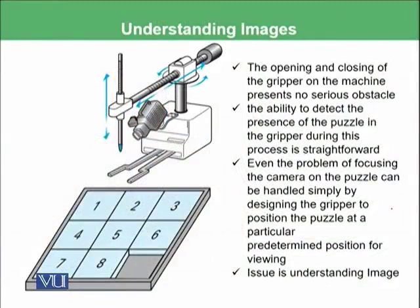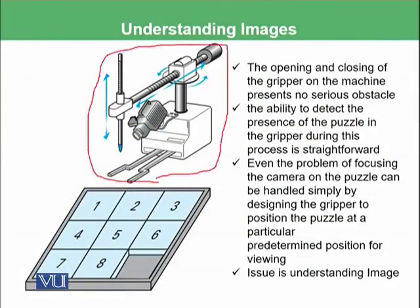We are going back to the same puzzle example where we have made an intelligent agent — this machine. That machine is going to play with us in this puzzle game. The opening and closing of the gripper on the machine presents no serious obstacle; you can make such a mechanical system very easily. The ability to detect the presence of the puzzle in the gripper is also straightforward. Even focusing the camera on the puzzle can be handled simply by designing the gripper to position the puzzle at a predetermined position for viewing.